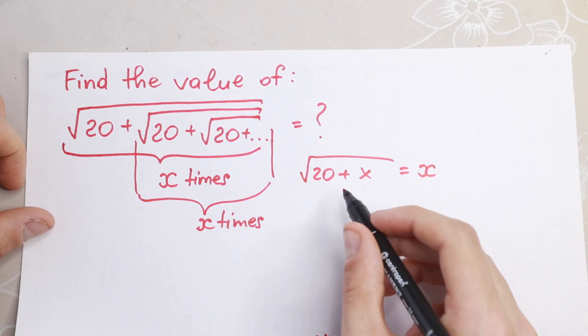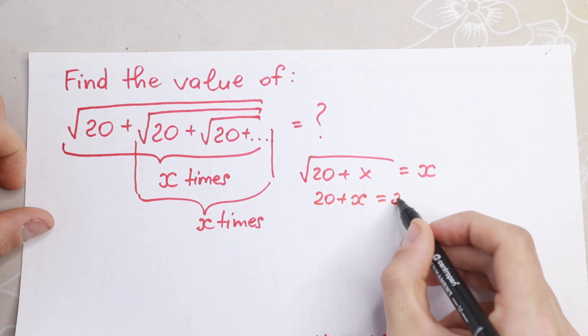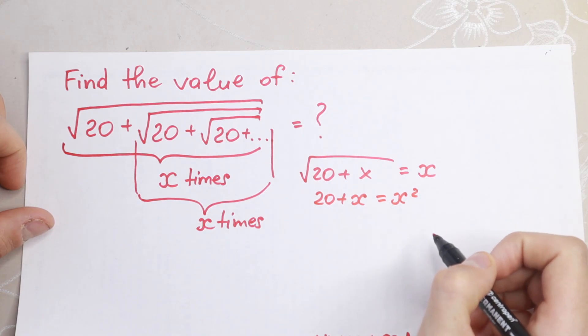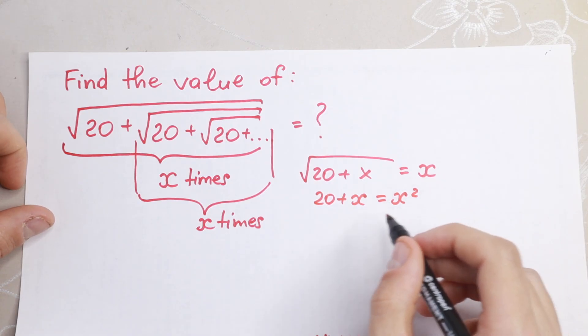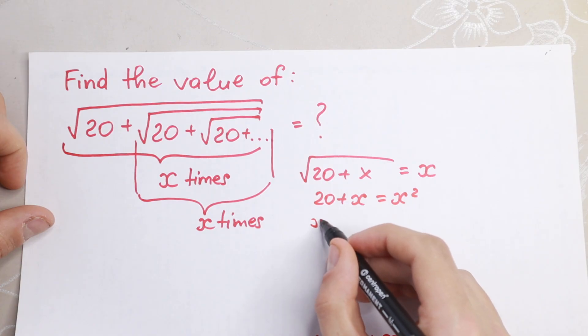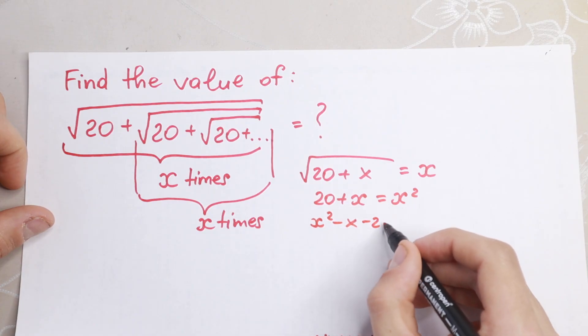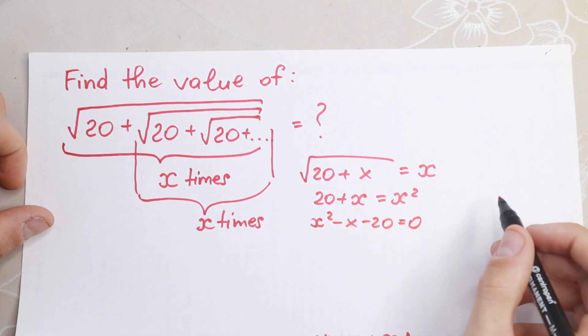Moreover, if we raise to the second power, we will have that 20 plus x equal to x square. How can I solve it? Of course quadratic equation: x square minus x minus 20 equal to zero.